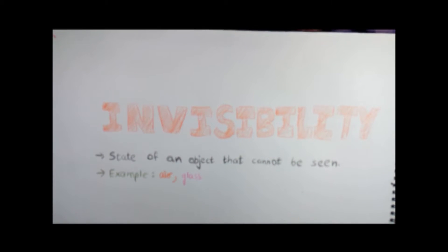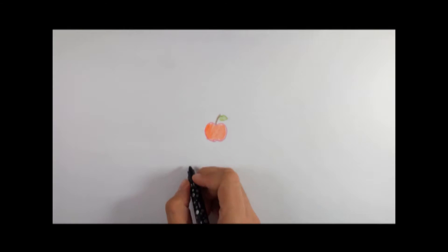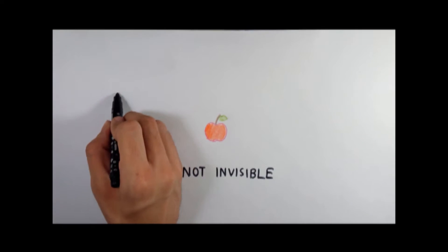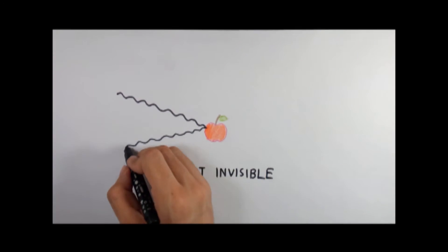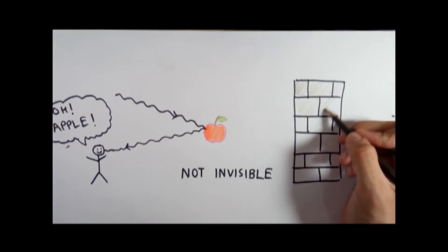But what if I say that I have an apple? This one actually. It is clearly not invisible, right? It's because the light gets reflected when it strikes the apple. Therefore, we see the apple but not the wall behind it.